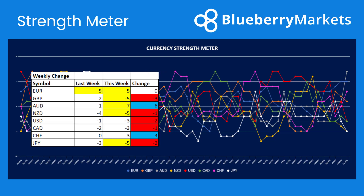Moving on to the strength meter, we're actually seeing a lot of currencies coming into these extremes now. Euro is still remaining as a plus 5 currency and hasn't moved away from that, so there's potentially a little bit of flatlining going on at this moment in time. The pound has moved into reversal territory, coming into the minus 5. The Australian dollar is the strongest currency at the moment at plus 7, which is coming into what we like to see as an extreme reversal area. New Zealand dollar and yen are also coming into those sort of reversal areas.